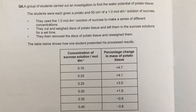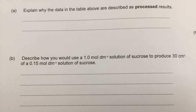These questions are always very formulaic in what they're asking. The first part asks: explain why the data in the table are described as processed results. Anything that's been processed means a calculation has been done on it — that is the answer. All you need to write is that calculations have been made using the raw data. The raw data is what we collect; the processed data is what we end up with after calculation.